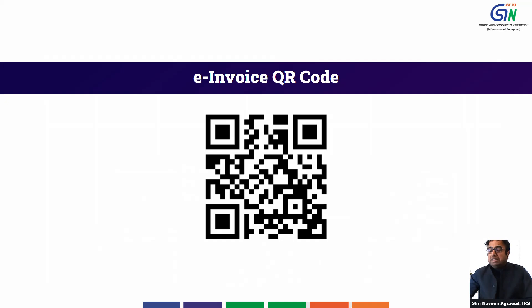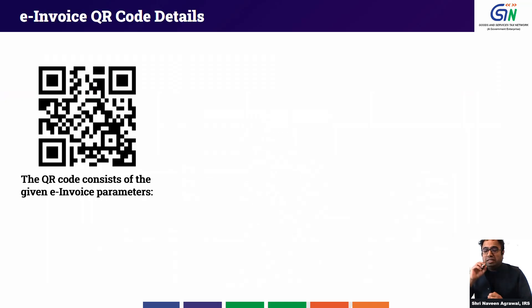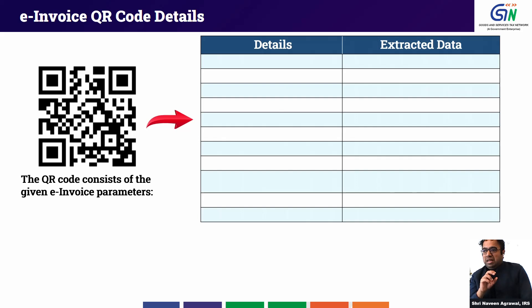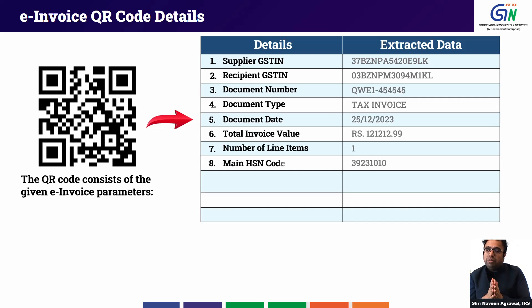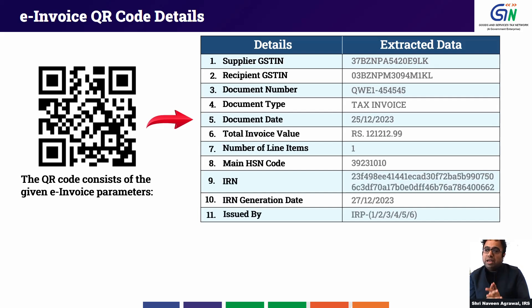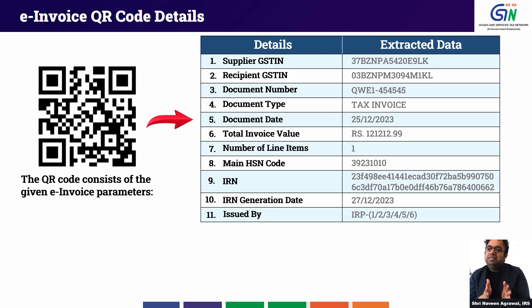The second method is offline verification. Every invoice has a QR code embedded by the IRP, and this QR code has 11 attributes. Here you can verify more attributes than in online mode: supplier GSTIN, recipient GSTIN, document type, document number, document date, invoice value, number of line items, main HSN code, IRN number, IRN generation date, and which IRP — IRP 1 through 6 — issued the QR code and IRN number.